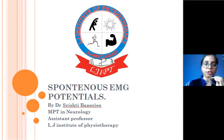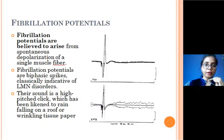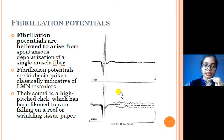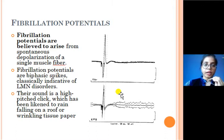If any abnormal potentials are seen in this zone of electrical silence, they are known as spontaneous EMG potentials. There are a variety of spontaneous EMG potentials. The first are fibrillation potentials. As you can see in this diagram, they arise from depolarization of a single muscle fiber. This is abnormal because in the zone of electrical silence there should be no depolarization. Fibrillation potentials are biphasic and are specifically seen in lower motor neuron type of lesions.